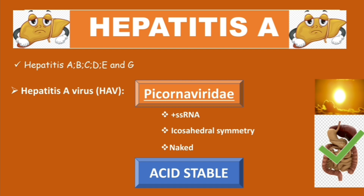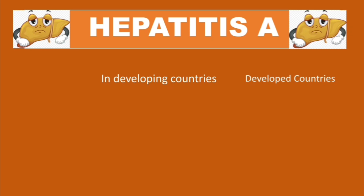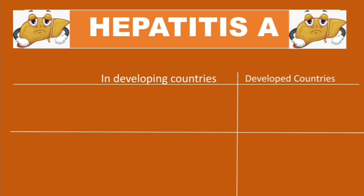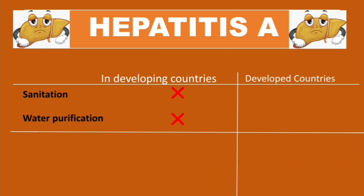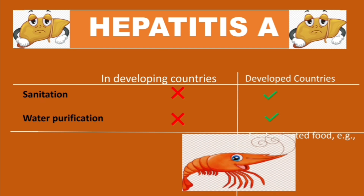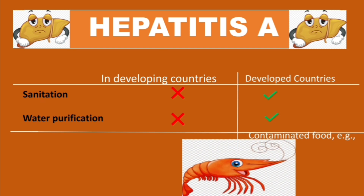In developing countries, poor sanitation and inadequate water purification mean people can get infected by drinking contaminated water. In developed countries, sanitation and water purification are excellent, so the main route is through eating contaminated foods — most commonly raw shellfish.